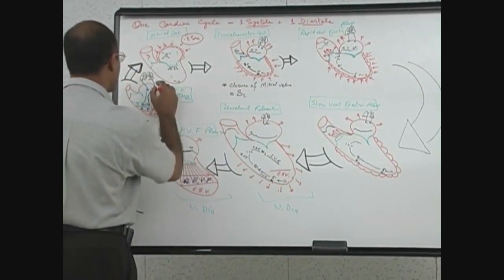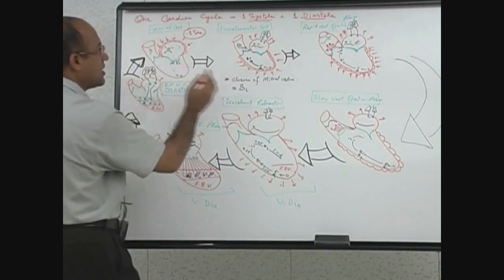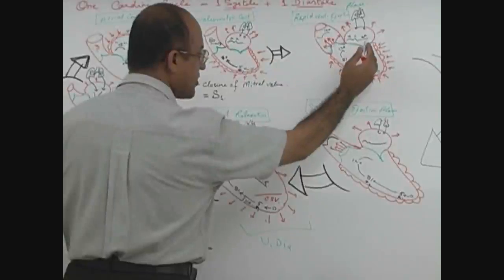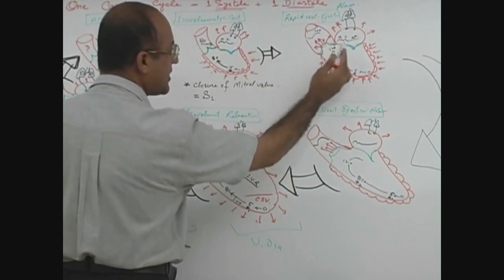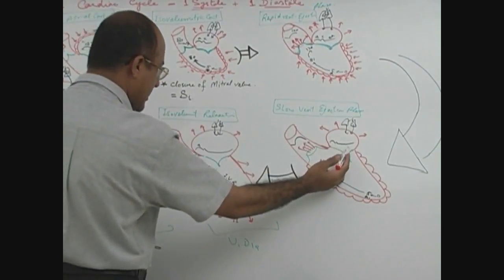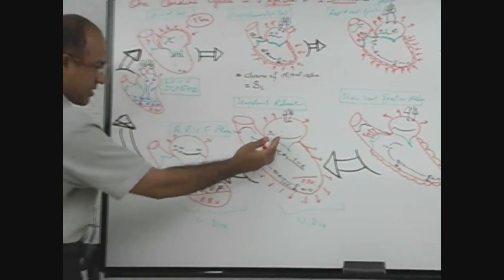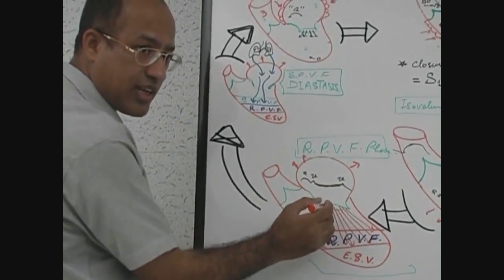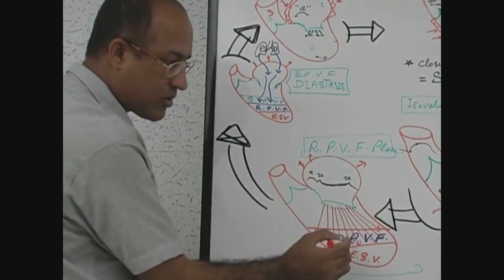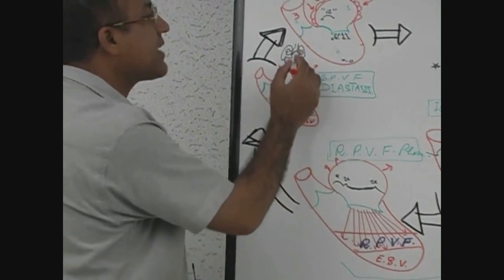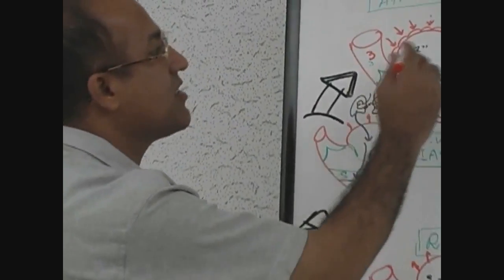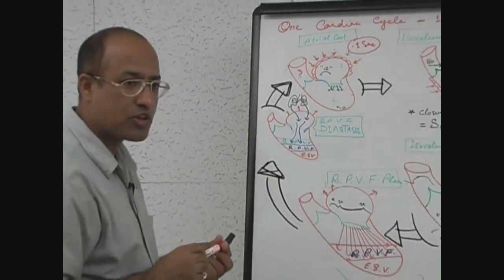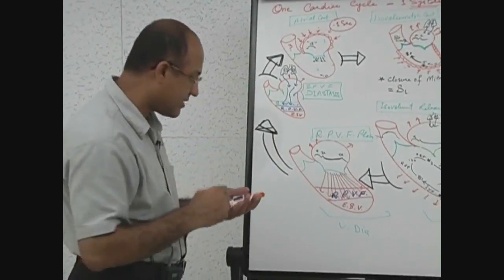During atrial diastole, how do the atria work? The atria work as a simple reservoir — working as a reservoir here, as a reservoir here, as a reservoir here, as a reservoir here. Then here the atrium acts as a communication channel and accumulated blood comes to the ventricle. Then it acts as a simple conduit, and finally there is atrial contraction.